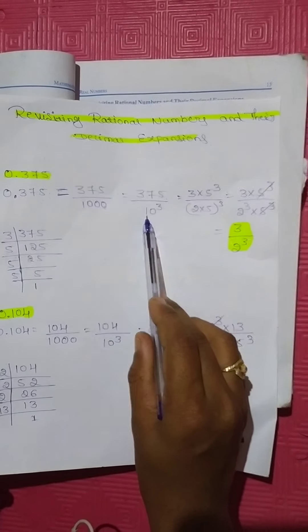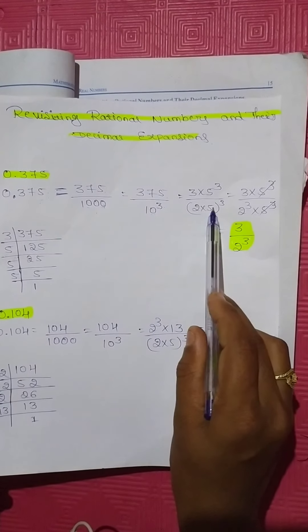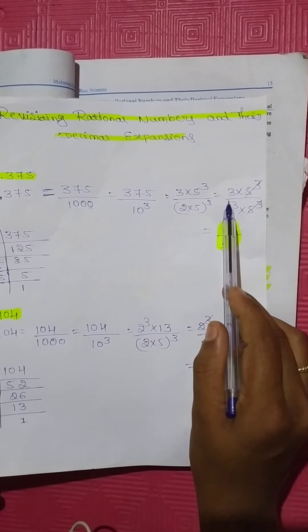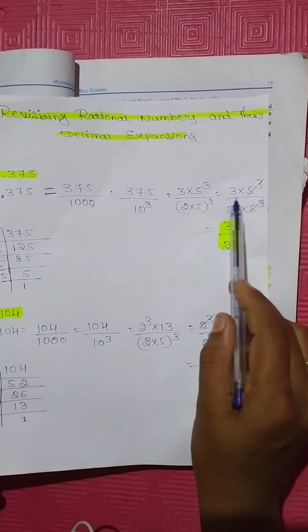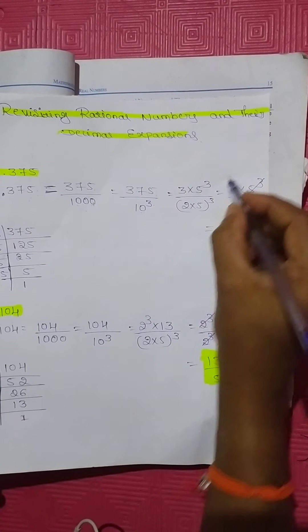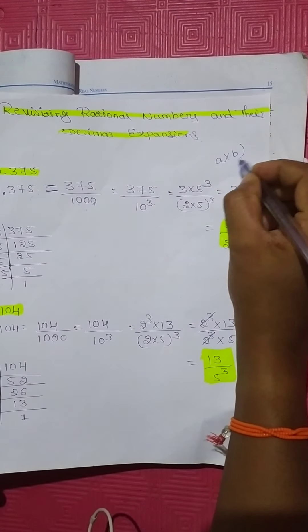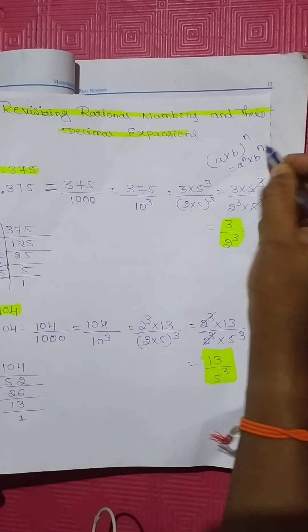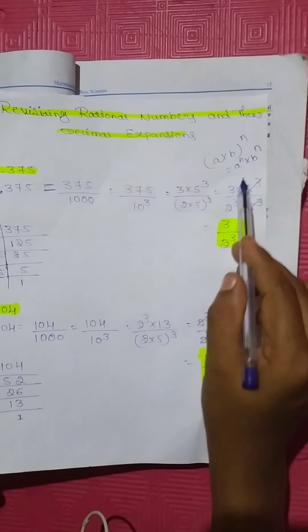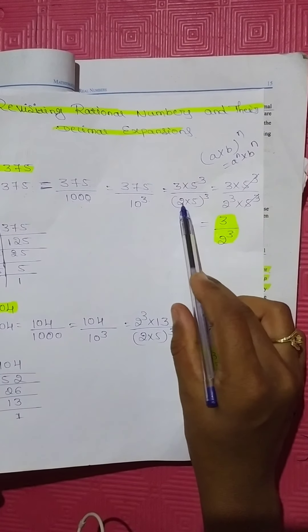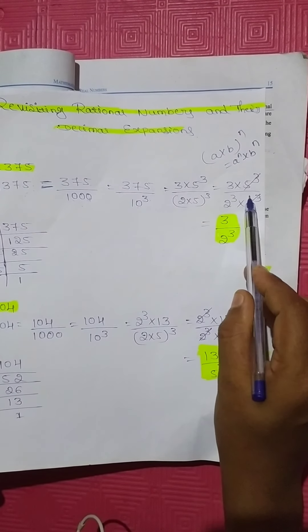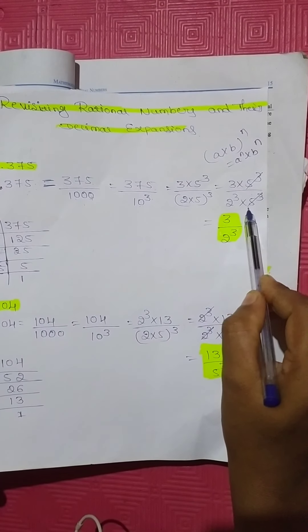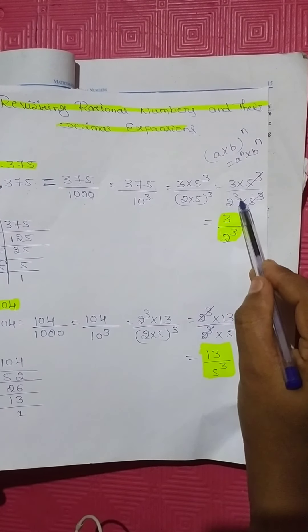Using the identity (A × B)^N = A^N × B^N, the denominator becomes 2 to the power of 3 into 5 to the power of 3. The 5 to the power of 3 in numerator and denominator get cancelled, leaving the remaining result as 3 by 2 to the power of 3.